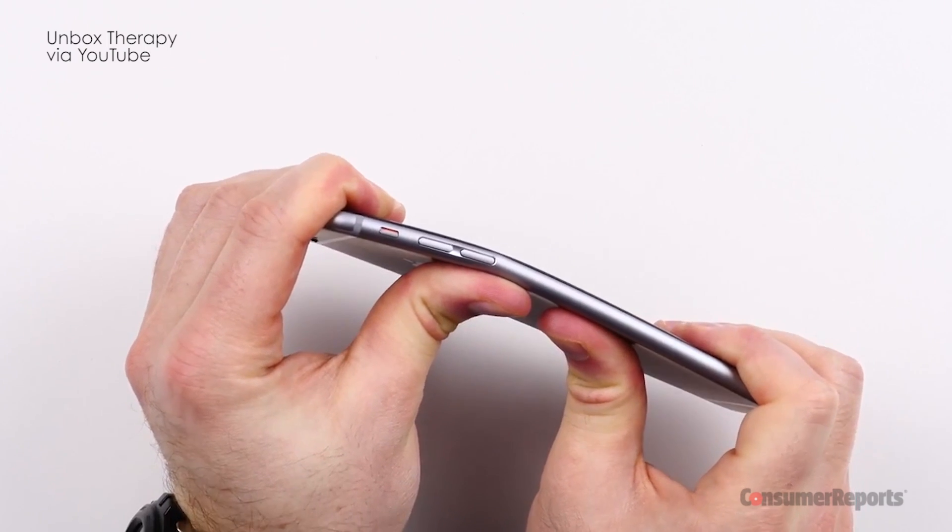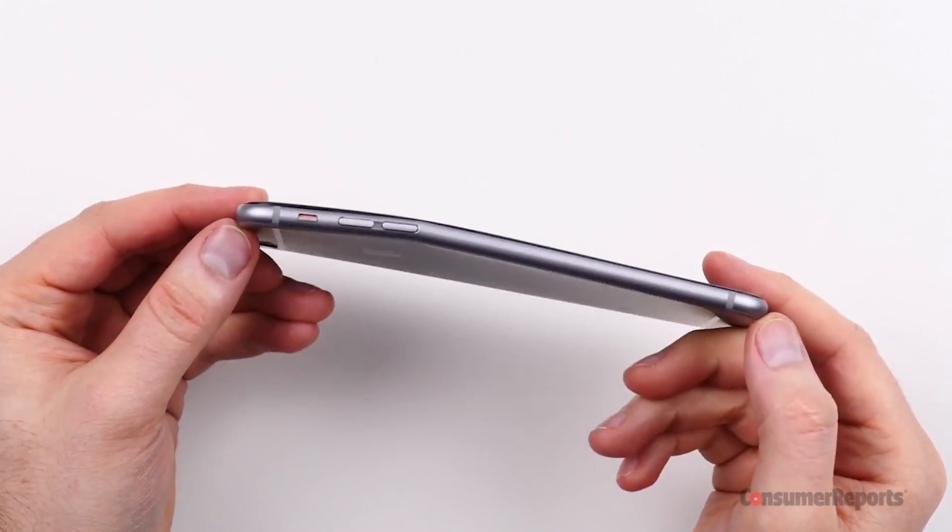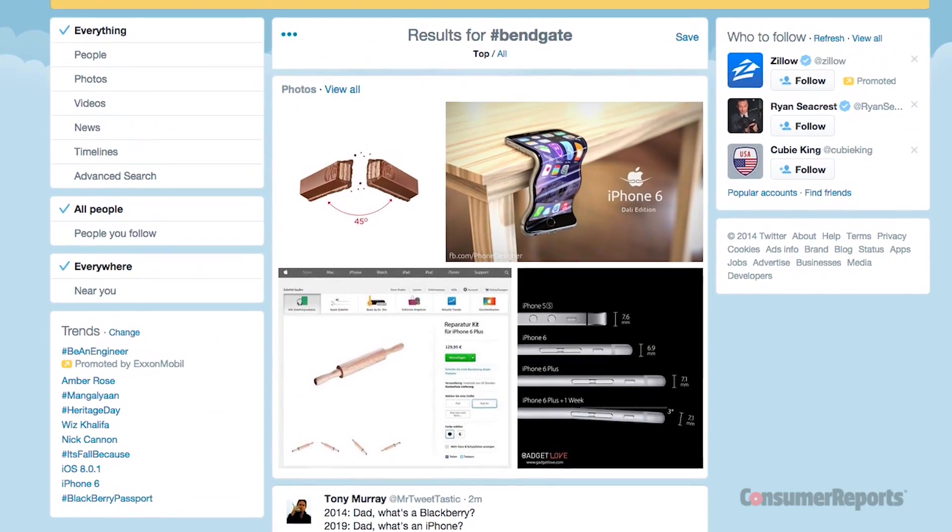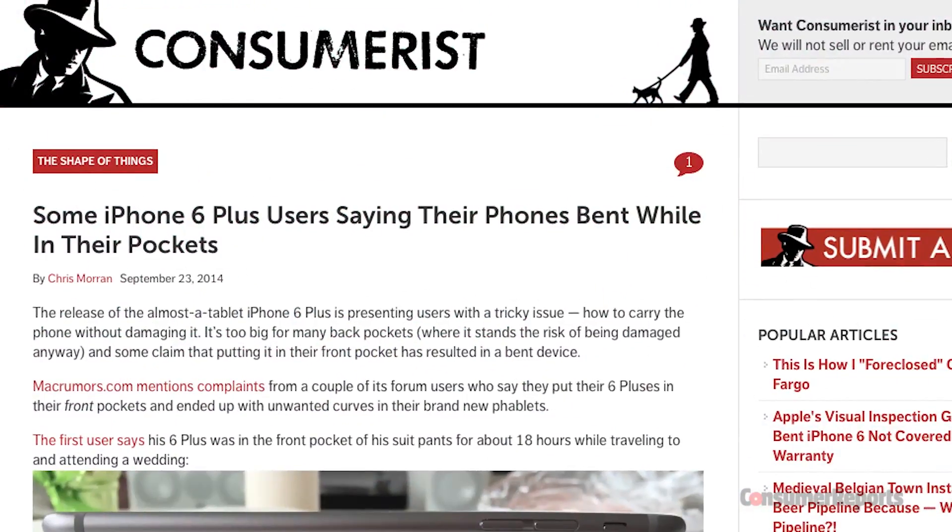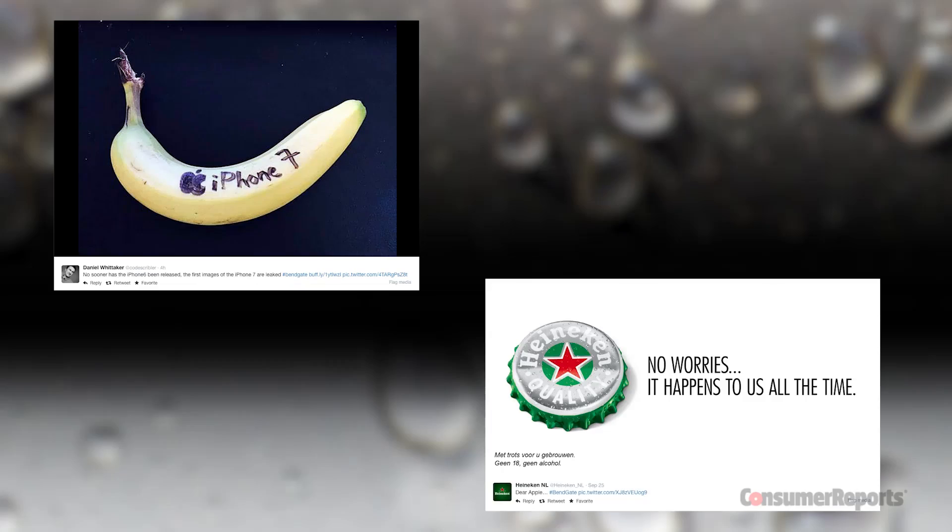This video sparked an online viral storm about the new iPhone 6 smartphones and how they bend under pressure. From there, hashtag BendGate took off on social media with people bending their phones, blaming tight pants, and spoofing the whole story.